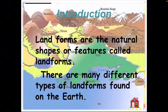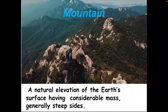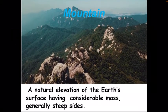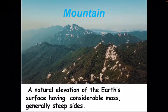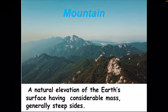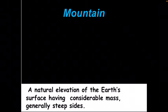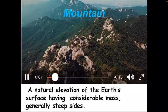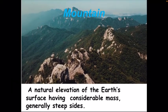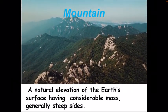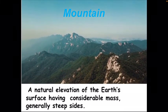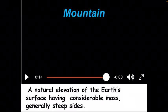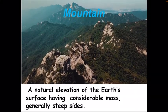When I talk about mountains, the first thing that comes to mind is of course Mount Everest. A natural elevation of the earth's surface with considerable mass and generally steep sides is called a mountain. Mountains are the highest landforms of the earth. You can see how high they are and there is also a temperature difference. Mountains have sloping sides and a peak, which is the highest point.